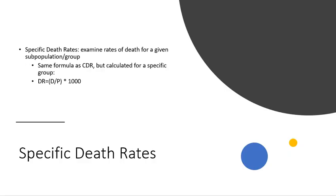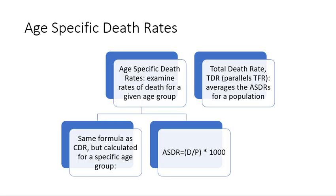There are also specific death rates, just as there are specific birth rates and fertility rates. Specific death rates are for particular subpopulations, and those can be based on age or other criteria such as ethnicity or sex. Age-specific death rates examine rates of death for particular age intervals, used to calculate the total death rate — which is parallel to the total fertility rate — by summing and averaging the age-specific death rates. The formula is the same as the crude death rate but only for a subpopulation defined by age interval.